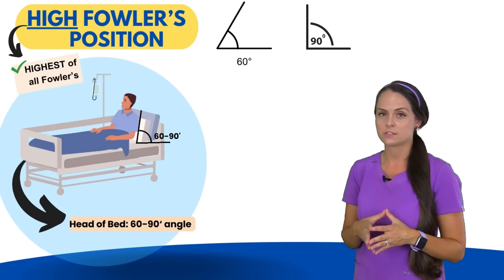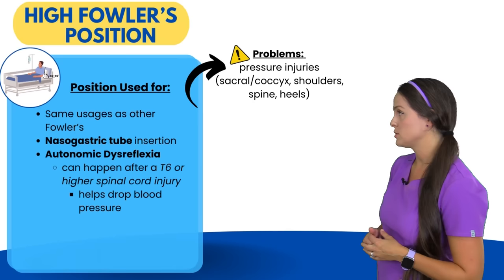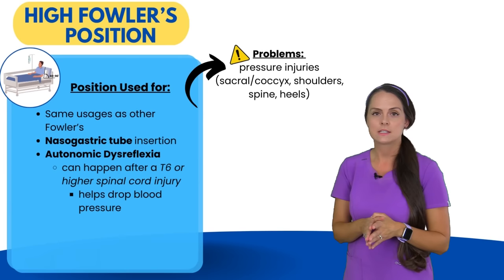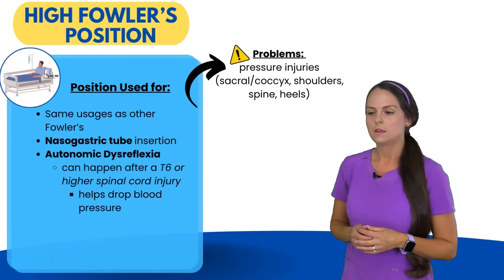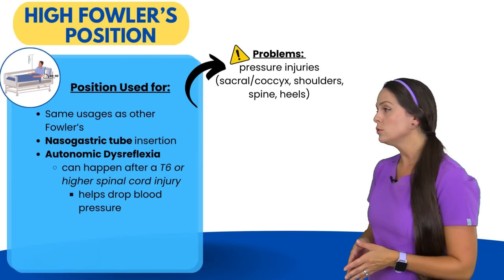Lastly, we have high Fowler's position — the highest of all the Fowler's positions, with the head of the bed at about 60 to 90 degrees, so the patient is sitting straight up in bed. It shares the same usages as the other Fowler's positions but is very helpful for nasogastric tube insertion and for patients experiencing autonomic dysreflexia. This condition only occurs in patients with a spinal cord injury at T6 or higher; placing them at 90 degrees will drop their blood pressure. Pressure injury risks include the sacral and coccyx area, shoulders, spine, and heels.